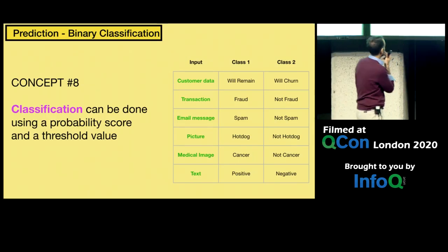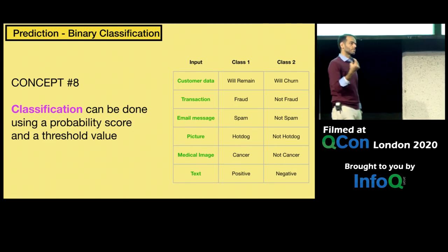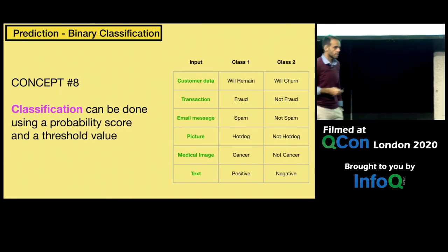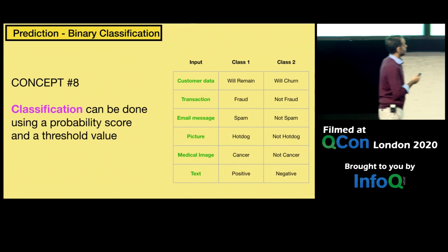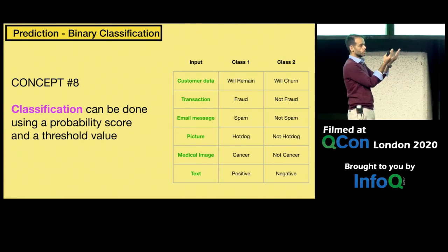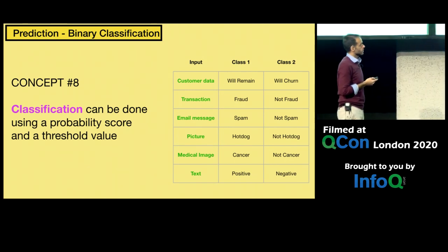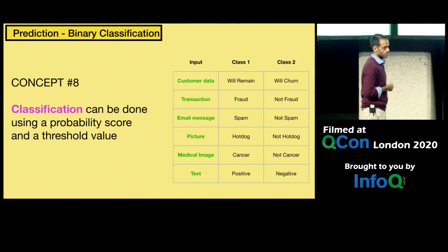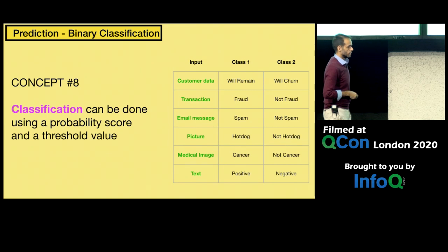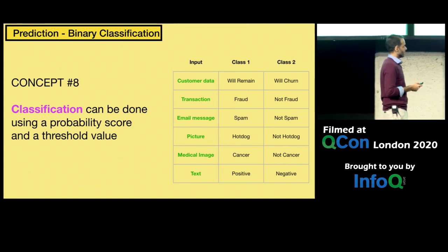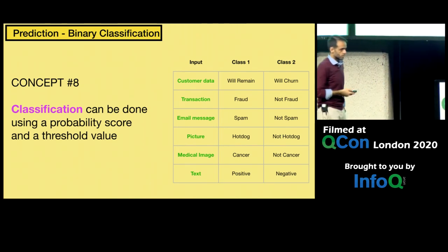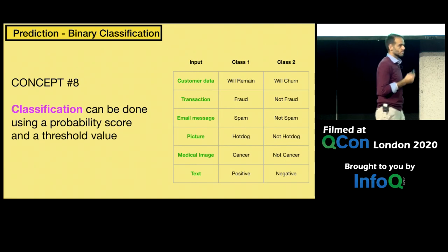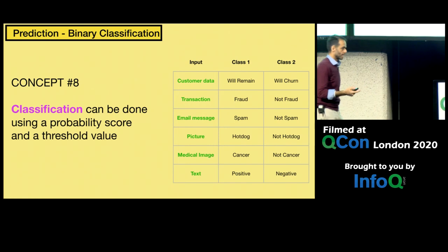Classification means assigning something a class from two or more options. For customer data: will this customer churn or remain? That's binary classification. For a transaction: is it fraud or not fraud? For email: spam or not spam? For a picture: hot dog or not hot dog, or in medical imaging, cancer or not cancer. For text: is the sentiment positive or negative? That's sentiment analysis — text classification.